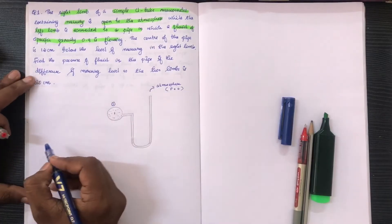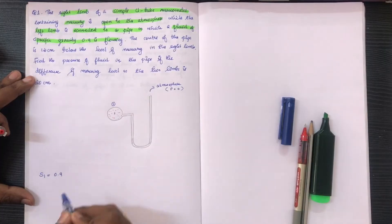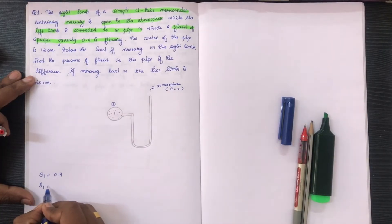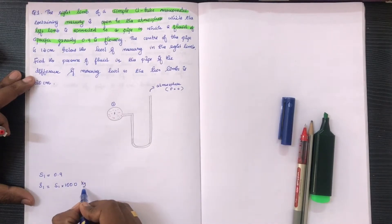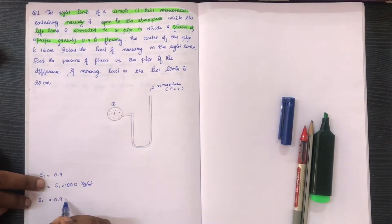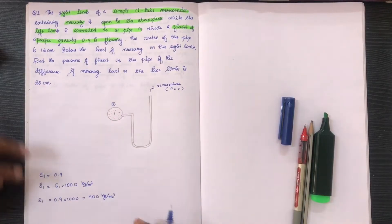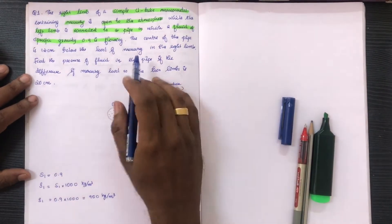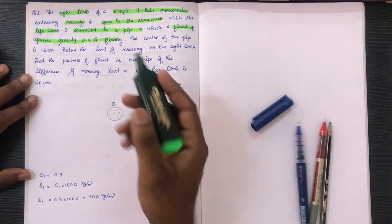Let's look at the specific gravity. S1 is equal to 0.9. The density of the fluid is equal to 0.9 times 1000 kg per meter cube. So the density is equal to 900 kg per meter cube. The center of the pipe is 12 cm below the level of mercury in the right limb.